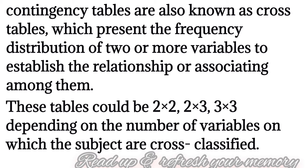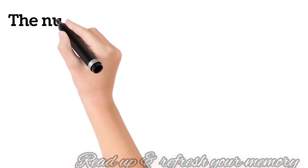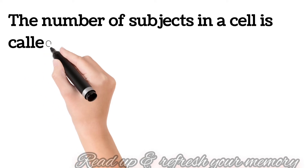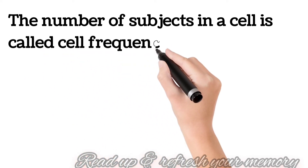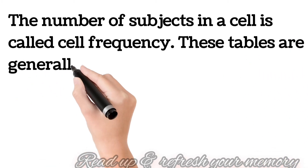Contingency table is also known as cross table, presenting the frequency distribution of two or more variables. It is mainly used to study the correlation between two variables. The table could be 2×2, 2×3, or 3×3 depending on the number of variables. The subjects are cross-classified, and the number of subjects in each cell is called cell frequency. These tables are generally used in chi-square test.